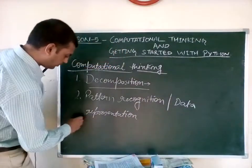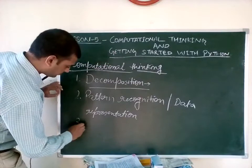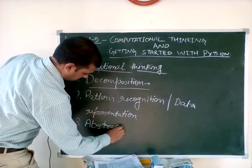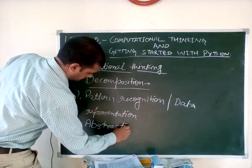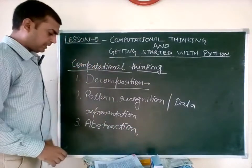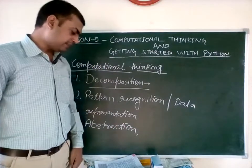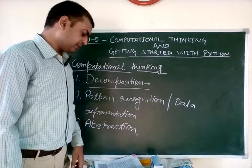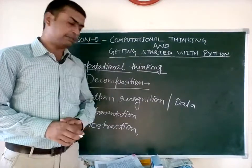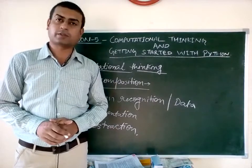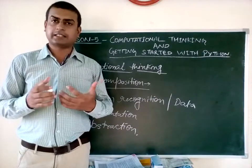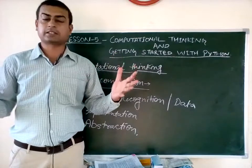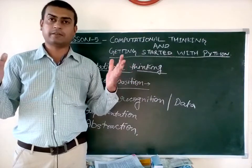The third point is abstraction. Abstraction is filtering out unnecessary details and information to focus only on the important information. As the name suggests, if you have a big, complex thing, you must extract the useful contents from it.